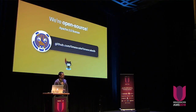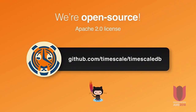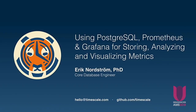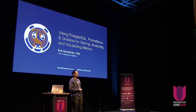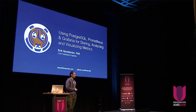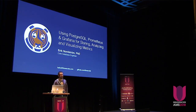TimescaleDB is open source, developed under the Apache 2 license. If you're interested in learning more about the development, you can go to our GitHub page and give us some stars. I'm going to talk more about TimescaleDB in the context of Grafana and Prometheus, and how we can use TimescaleDB for basically all your metric needs for storing, analyzing, and visualizing metrics — that's coming up in another talk later this morning.